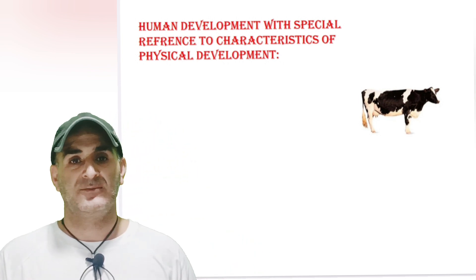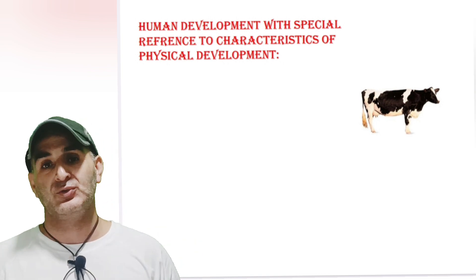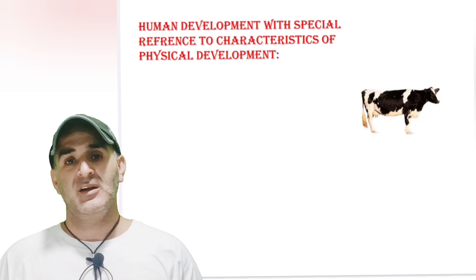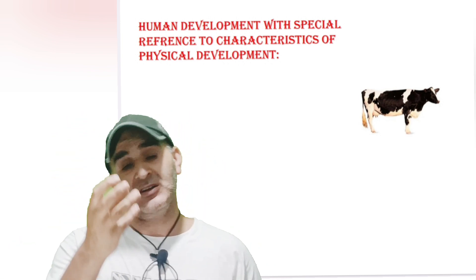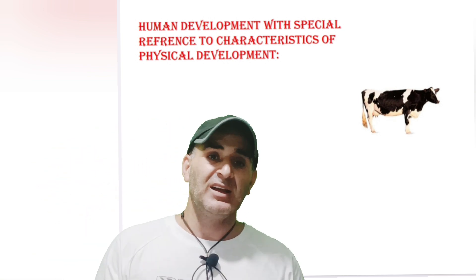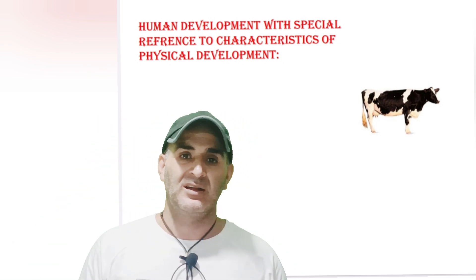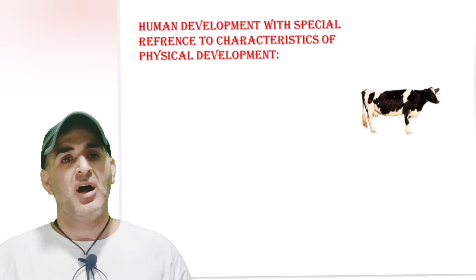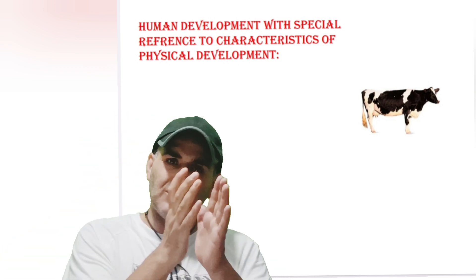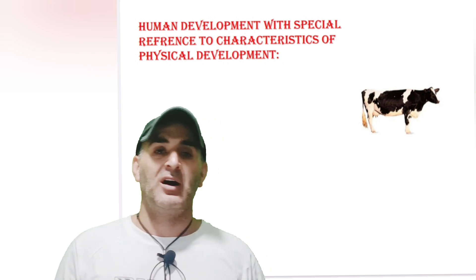As we know, development is both a quantitative and qualitative process. It means change takes place in both shape, size and functional aspect. Functional aspect means that an individual uses its body parts — for example, how we run, how we jump, how we use the different motor organs. So it comes in the domain of development.